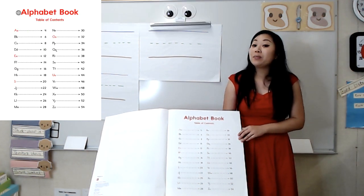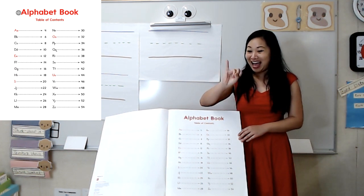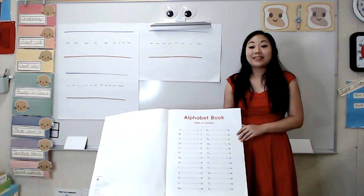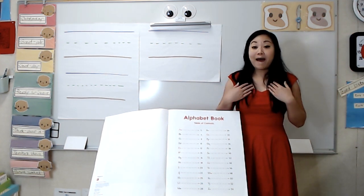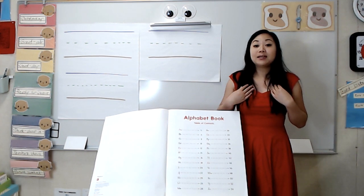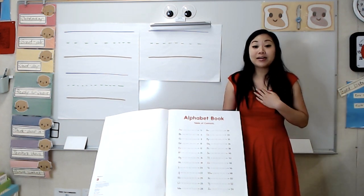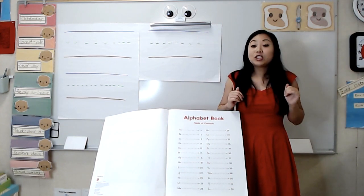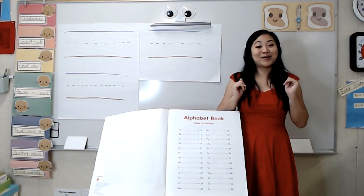Today we will be looking at two letter poems for the letters I and J. Before we look at them, let's talk a little bit more about those letters. Just like you and I have names, letters have names too. And when we write our names, we use an uppercase letter. Each letter has both an uppercase and a lowercase.